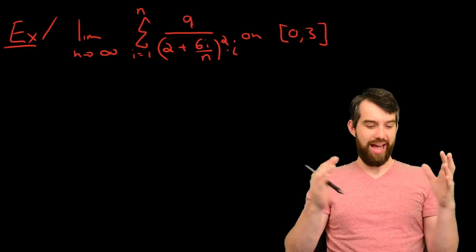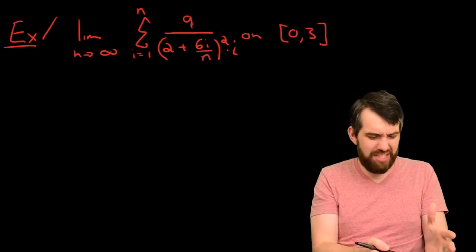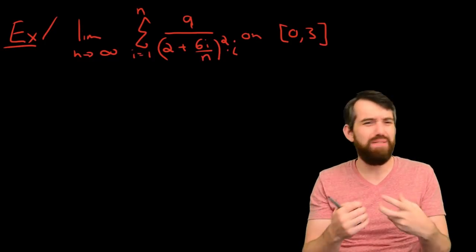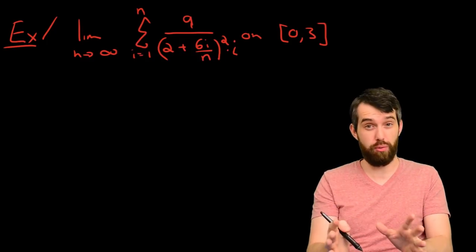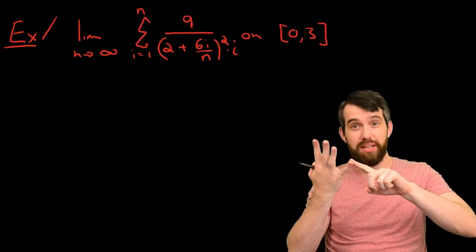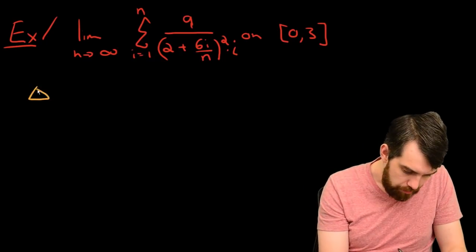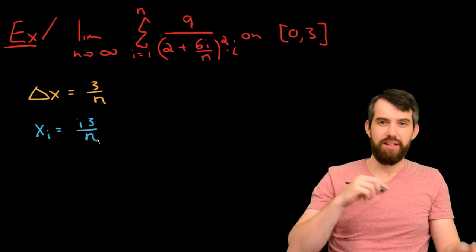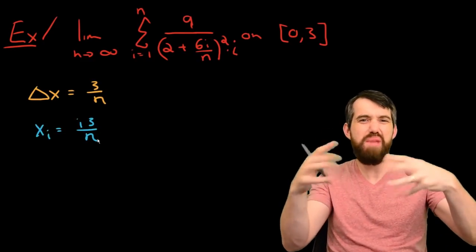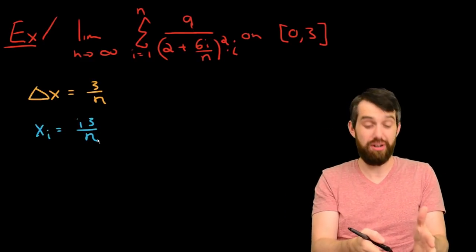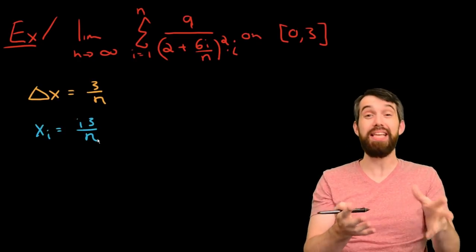All right, so I have this second example here. It looks like a much messier sum. It doesn't obviously look of the form f of x_i times delta x, but it is the same interval 0 to 3, so the delta x and the x_i are exactly the same, so let's write them down. So now what I have to do is I have to unravel the messy knot of this particular summation and try to see a delta x and try to see an x_i in there, even though it's messy.